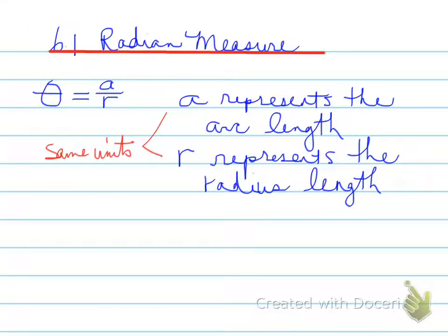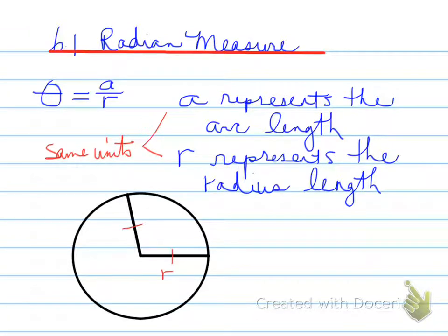Theta, as we see here, is going to represent the measure of the angle in radian measure. So it's going to be very important that when we use this formula, this theta represents the measure of the angle in radian measure. Now, in order to understand what radian measure is, we need to do the following.